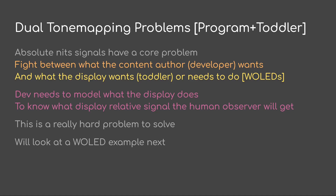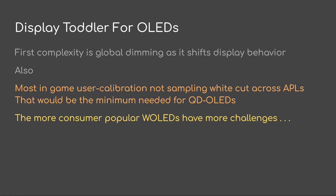Absolute nits signals have another core problem: there's a fight between what the content author — the developer — wants and what the display wants, the toddler, or what the display needs to do for W OLEDs. The dev would need to model what the display does to know what the display-relative signal the human observer will get — and this is actually a really hard problem to solve. The first problem is that the OLED is going to be doing global dimming, which effectively shifts display behavior. Also, in-game user calibration is not sampling the white cut across different APLs, which would be the minimum needed for QD OLEDs to understand display behavior. The more consumer-popular W OLEDs have even more challenges.